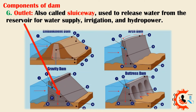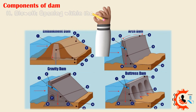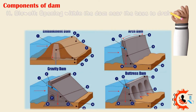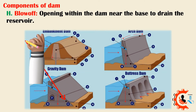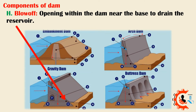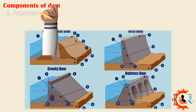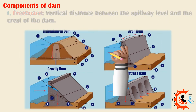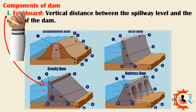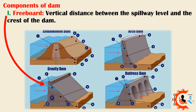G. Outlet, also called sluiceway — used to release water from the reservoir for water supply, irrigation, and hydropower. H. Blow-off — opening within the dam near the base to drain the reservoir. I. Freeboard — vertical distance between the spillway level and the crest of the dam.